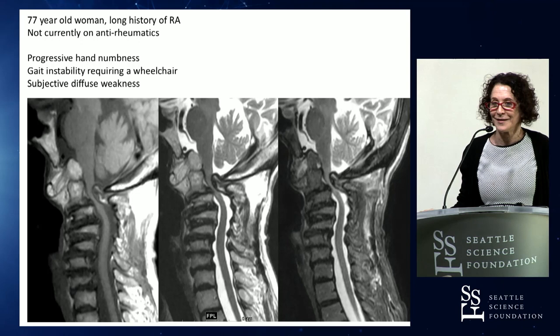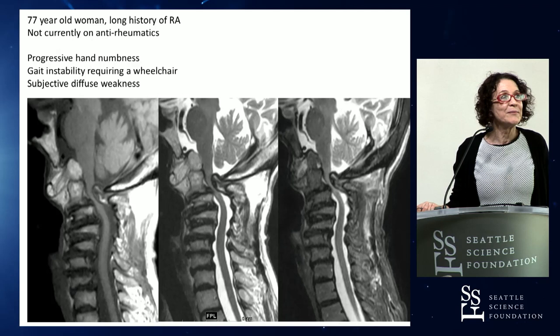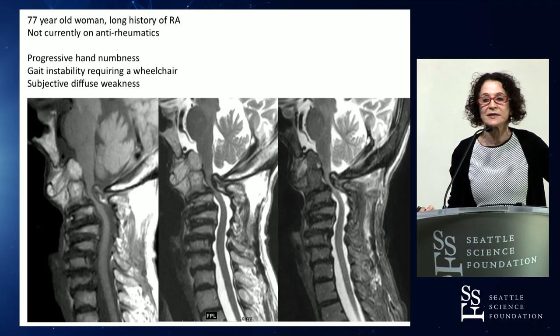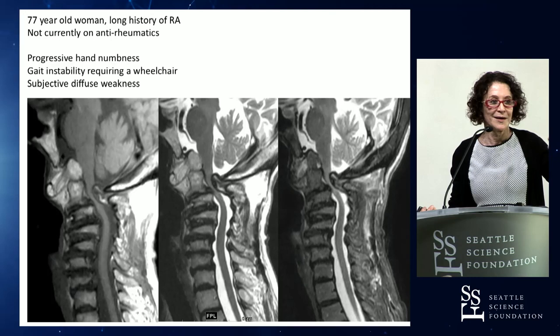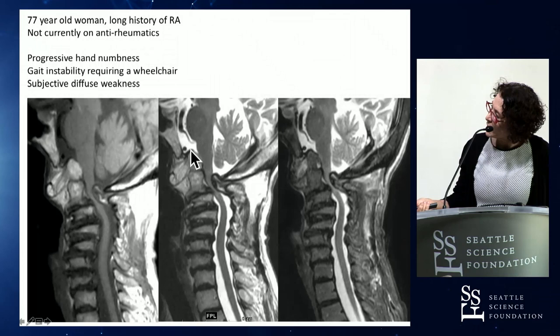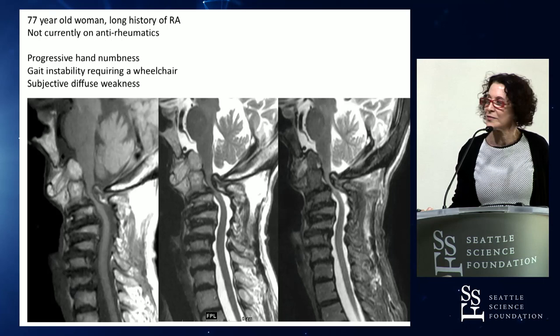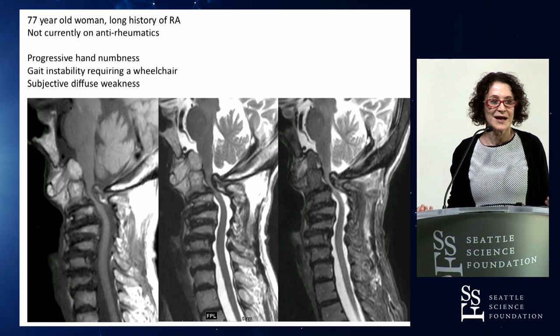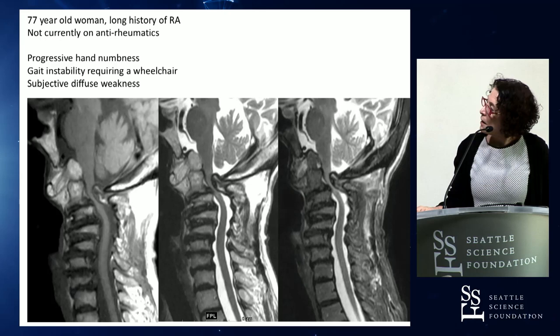The pannus is sort of nondescript on imaging - intermediate signal on all sequences, not very indicative, it's just there. We all say RA because that's what we expect. For those who don't use the measurement lines often, there are a number of ways to evaluate basilar invagination, and most papers say you need two or three to confirm the diagnosis because no one line works.